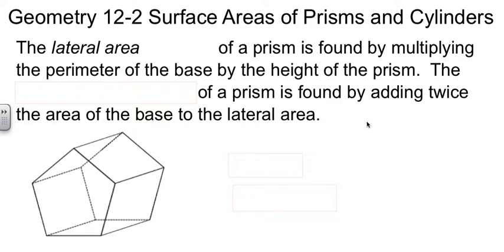You find the lateral area by taking the perimeter of the base times the height of the prism. On this pentagonal prism that I have here, the lateral area that we're talking about are these five rectangular surfaces going around the middle of it.